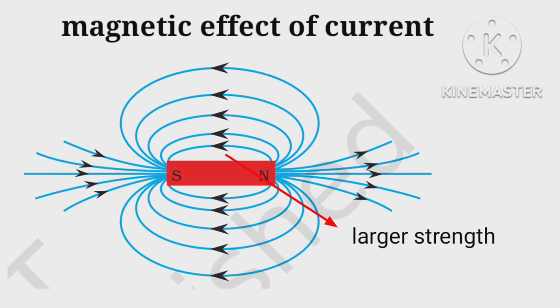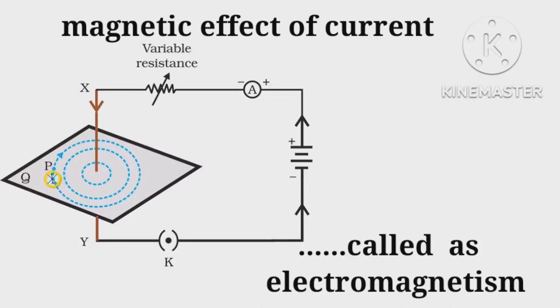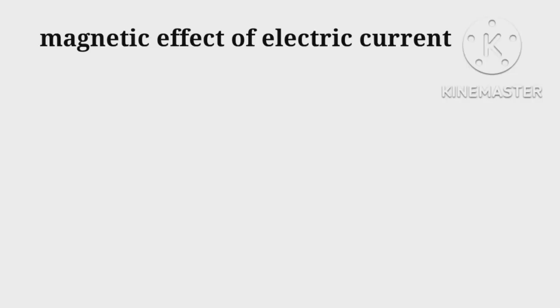A similar activity was observed when current is allowed to flow in a conducting wire. This phenomenon is called electromagnetism. Let us allow a current i to flow through a conductor.